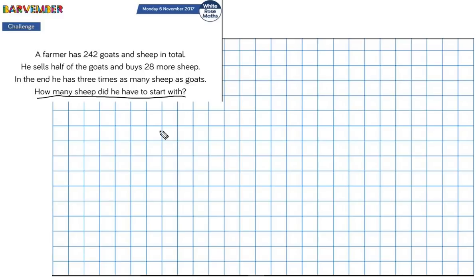Okay, let's think about how we might approach this, especially if we were relatively new to using bar models. Well, often kids will start at the beginning. Here we have a farmer has 242 goats and sheep. Fantastic. Right, so I might then draw a model.